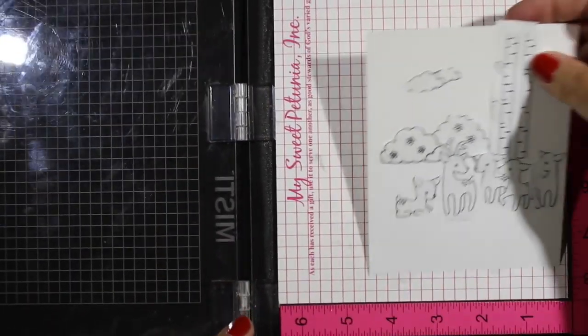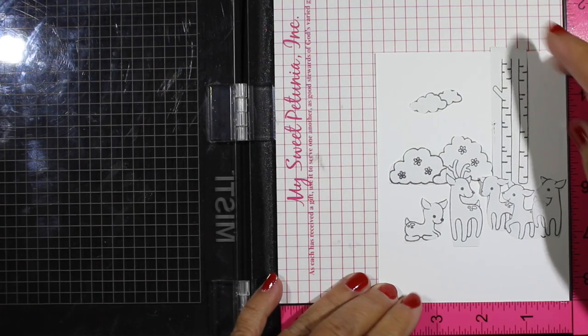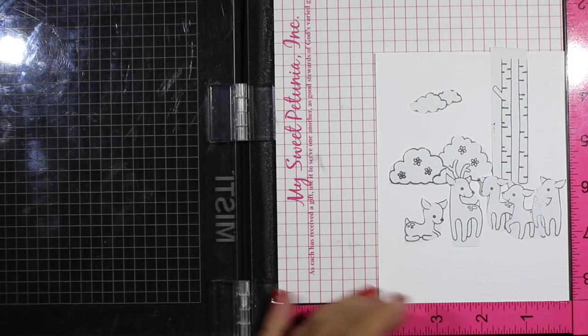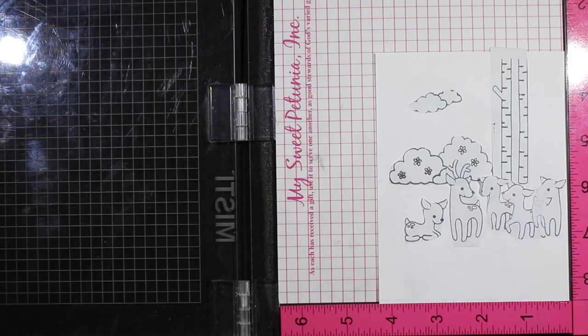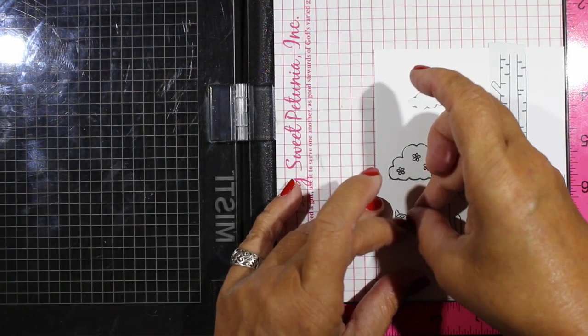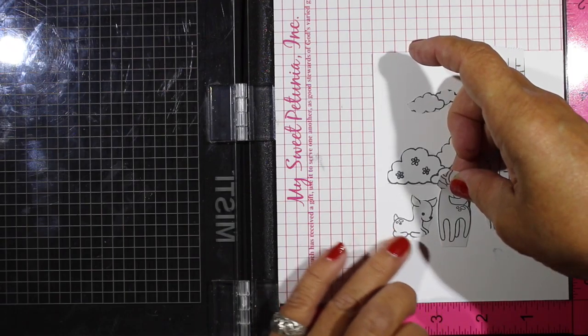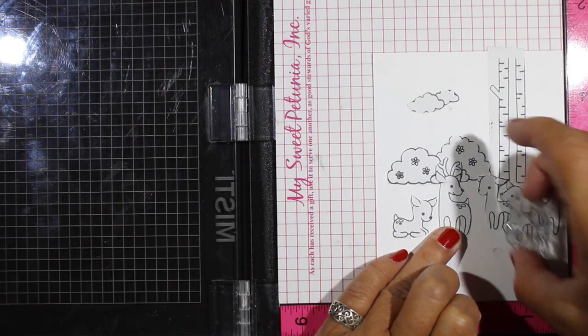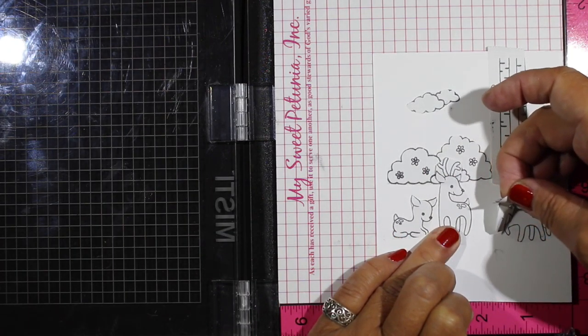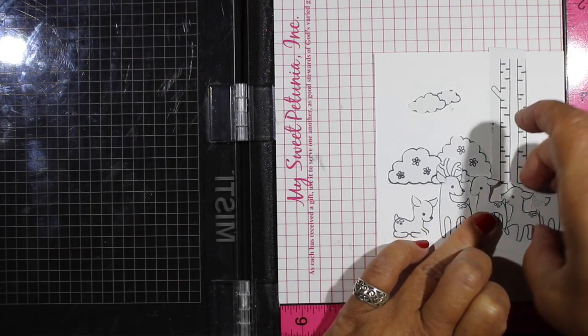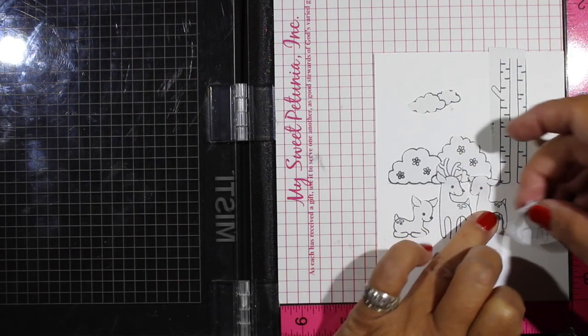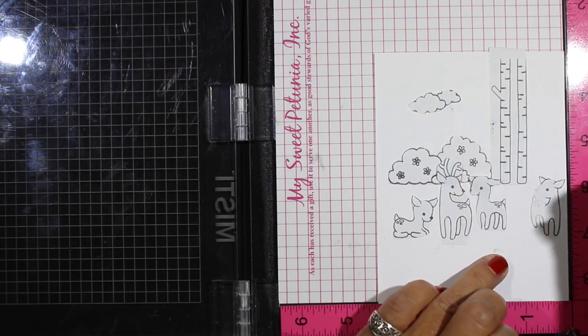So I'm going to take my MISTI and place my scratch paper, like my master, in here and I'm going to adjust a little bit if I need to before I start any stamping because it's easier to do with your masks than it is going to be if you start doing any of your stamping. Don't ask me how I know that, it's just easier, trust me.